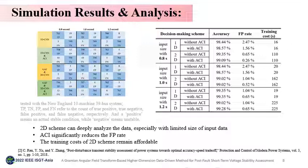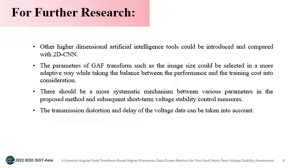The most inspiring finding is that the GAF transform provides an opportunity for STVS assessment to further adopt existing well-developed image intelligence tools, as 2D CNN is tested to be workable and advantageous in this research. Still, the proposed method needs to be improved with further research. First, beyond 2D CNN, other tools for image intelligence could be tested. Second, the parameters of GAF transform could be selected in an adaptive way. Most importantly, there should be a more systematic mechanism between various parameters in the proposed method and subsequent control measures. Also, transmission distortion and delay of the voltage data need to be considered.